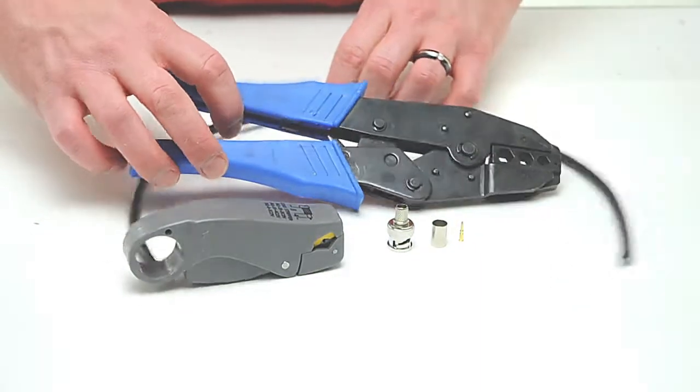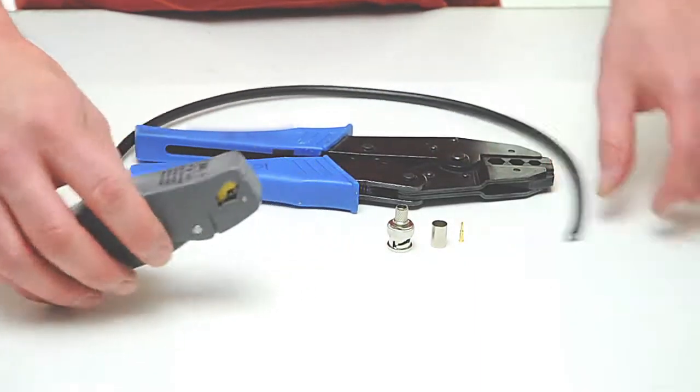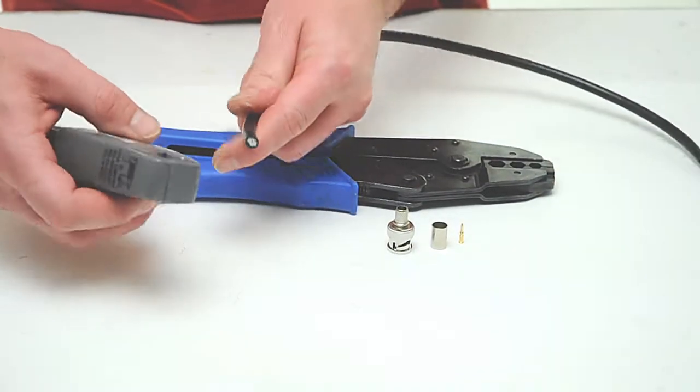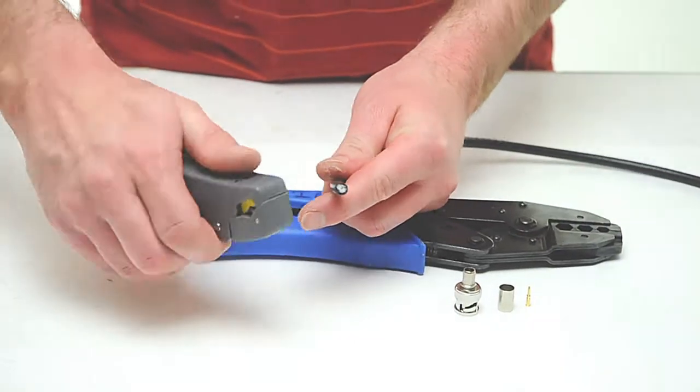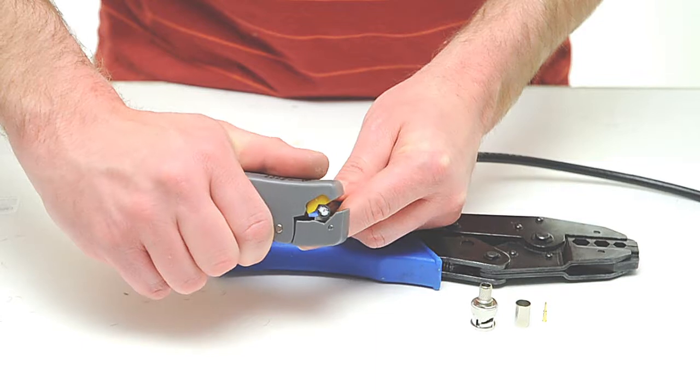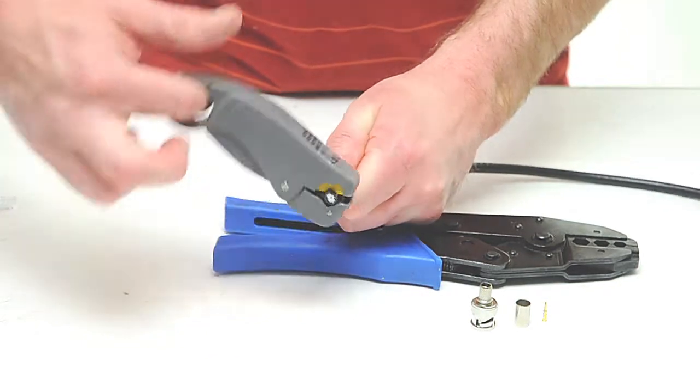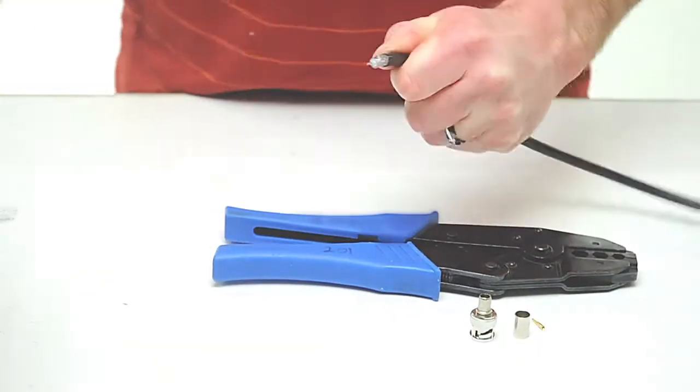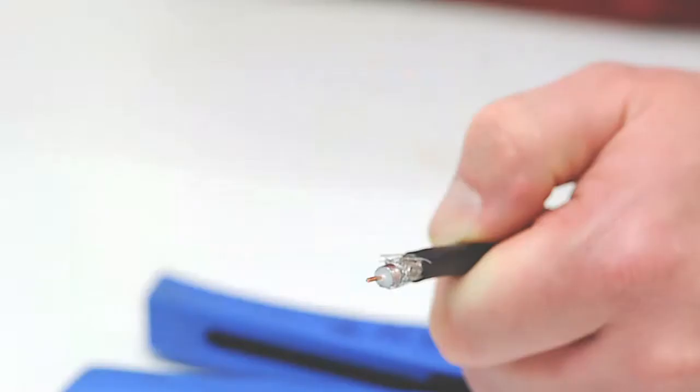To begin, take your coax stripper and remove the outer jacket and dielectric of the cable. The advantage of using a coax stripping tool is that it cuts both the outer jacket and dielectric at the same time. Rotate the tool a few times around the outside of the cable and peel the jacket off.